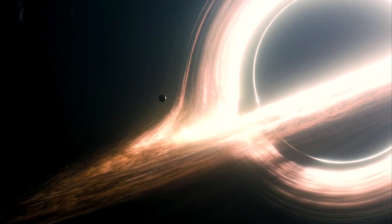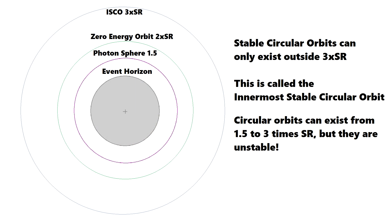Here's the question: what could you visit down there? Anything that stayed down there would have to be in a stable orbit. Because of this weird energy inversion, those circular orbits really close are not stable. It turns out that the closest you can have a stable orbit is three times the Schwarzschild radius. This is called the innermost stable circular orbit. Outside of that distance you could, in theory, have a planet orbiting — and there, time would run about 30% slower.